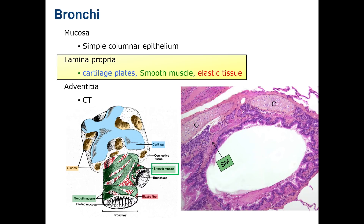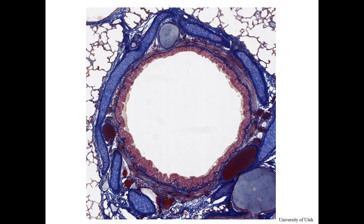Stimulation of the vagus produces contraction of the smooth muscle, while stimulation of the sympathetics inhibits contraction. As the bronchi decrease in size, there is also a progressive increase in elastic fibers. You can quite clearly see these muscle bundles and elastic fibers in an image of a bronchus stained with Mallory-Azen stain, which stains them dark red and stains the cartilage plates dark blue.